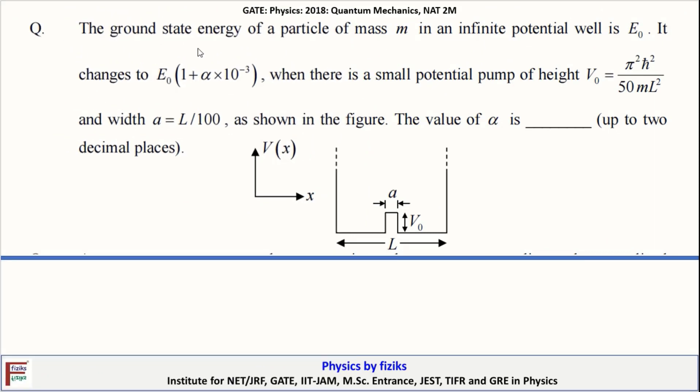The ground state energy of a particle of mass M in an infinite potential well is E₀. It is changed to E₀(1 + α × 10⁻³) when there is a small potential bump of height V₀ and width L/100, as shown in the figure. The value of alpha is what we have to determine.